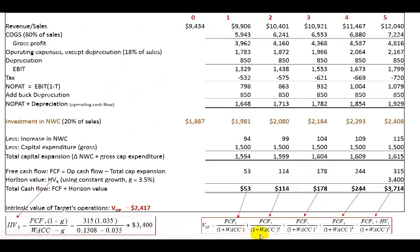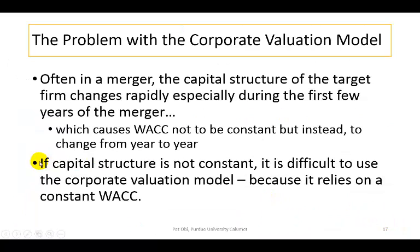Assuming that the discount rate denominator remains constant going forward would be presumptuous. If capital structure is not constant, it is difficult to use the corporate valuation approach because it relies on a constant WACC — not one that changes from year to year. Because of this limitation, in many merger analyses we use a more robust approach called the adjusted present value (APV) model, discussed in a different video presentation.